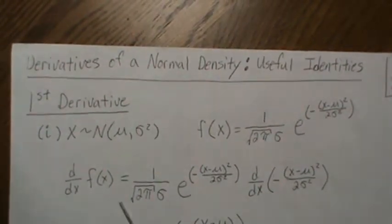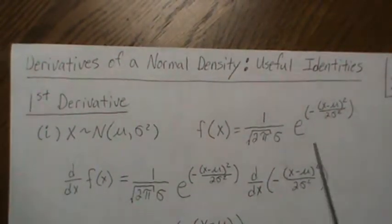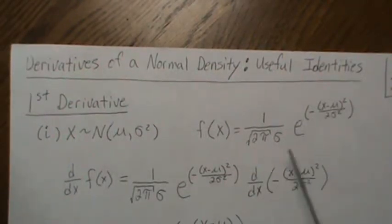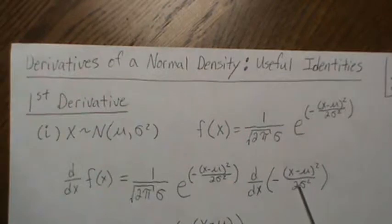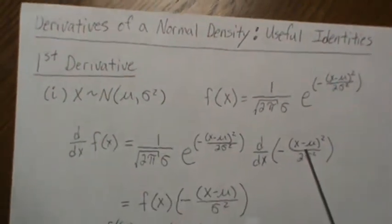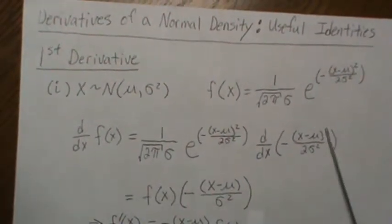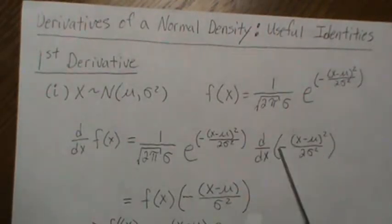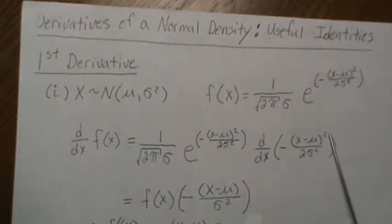Now this is a constant so it comes out front and we're taking the derivative of the exponential so we get it back, and then you take the derivative of the exponent. It's two times, well this is a constant so it comes out front, and then it's two times, subtract one, take the derivative of X which is one.